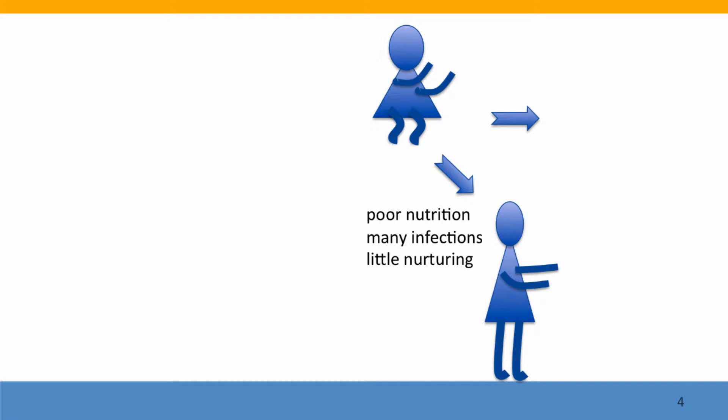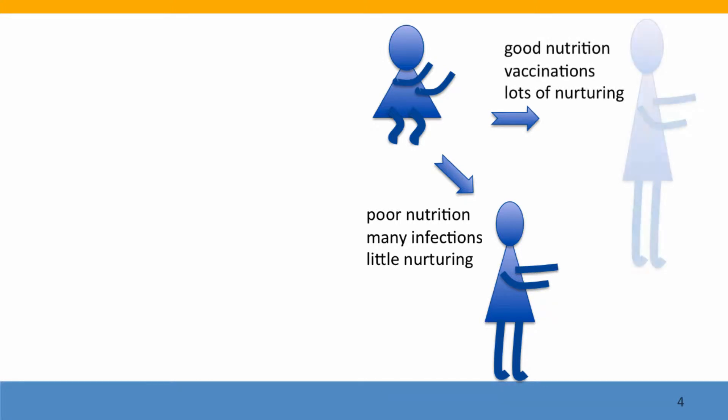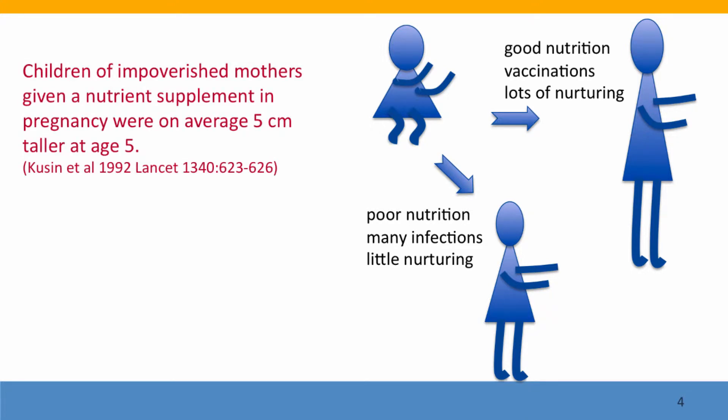she gets many infections, not enough nutritious food, and little emotional care, she's going to be shorter than if she grows up with good nutrition, vaccinations so she doesn't get infections, and lots of tender loving care. And this is not just opinion — there is solid data supporting this. When impoverished mothers were given a nutrient supplement while pregnant, their children were about five centimeters — roughly two inches — taller at age five.